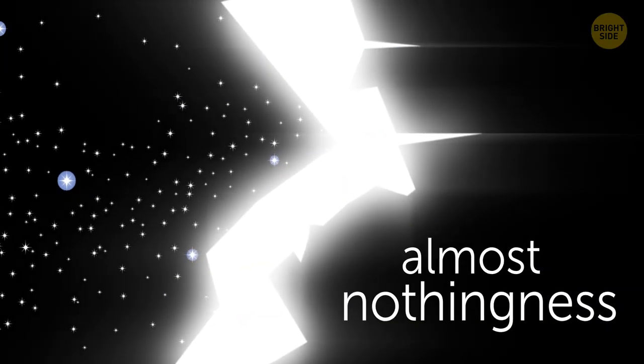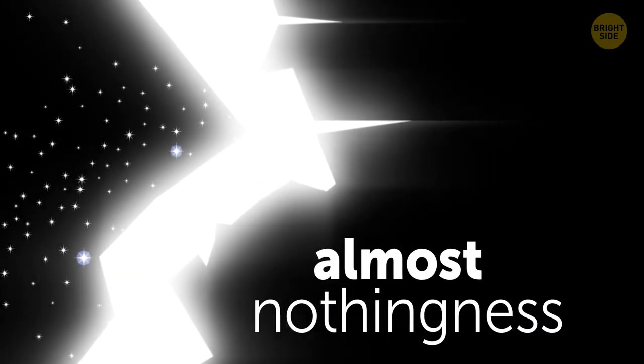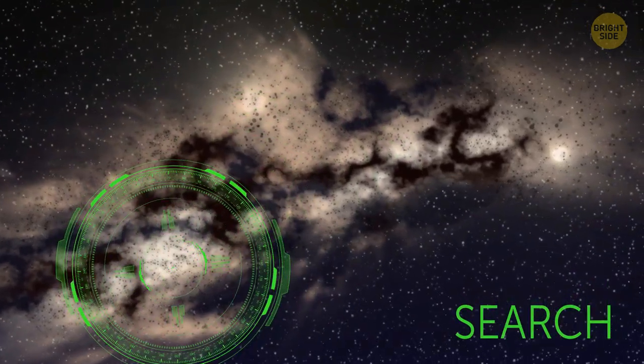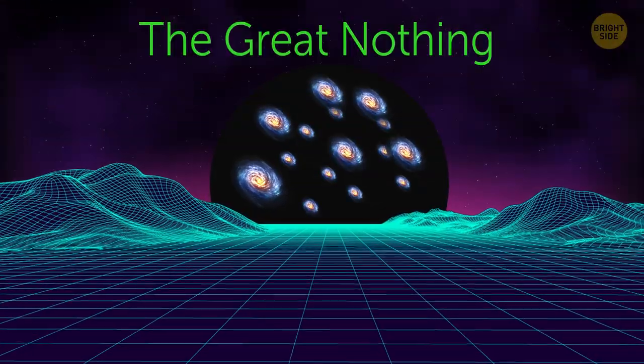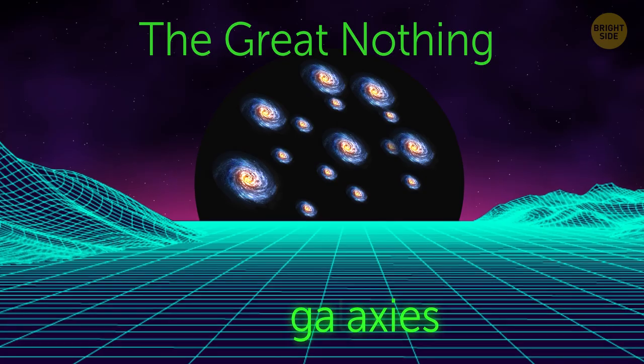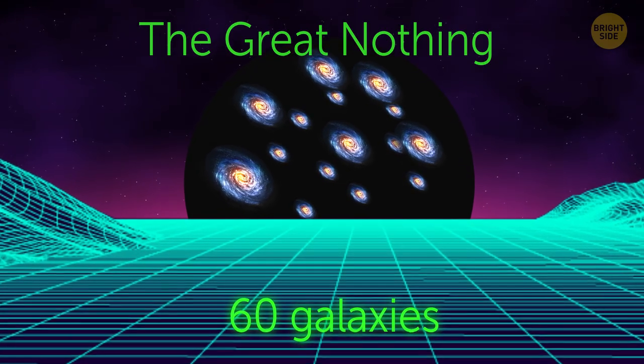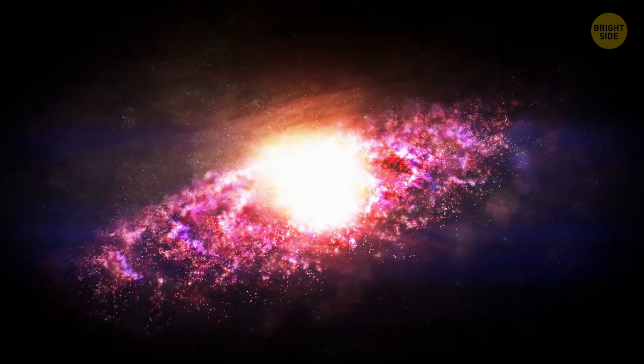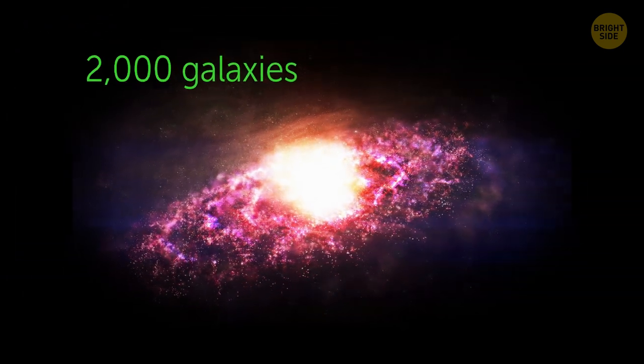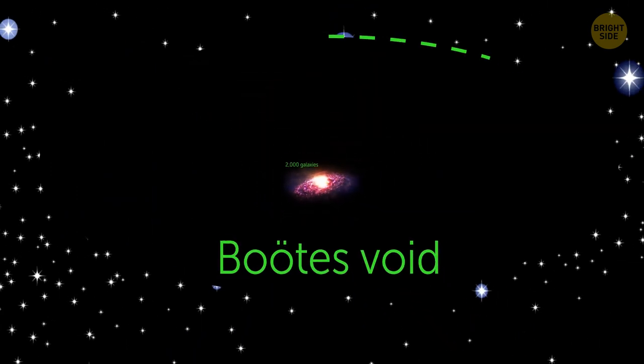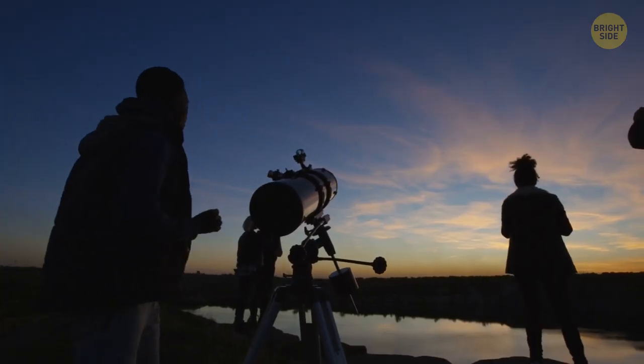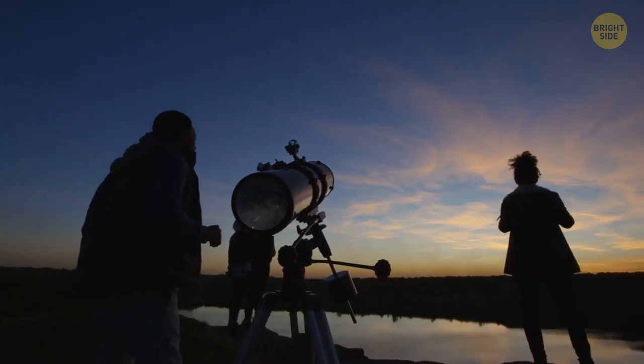But in this almost nothingness of great voids, almost is the key word. They still contain matter, just a lot less than anywhere else. The Boötes Void, or as it's also called the Great Nothing, was proved to have about 60 galaxies. And that's only the assumed number. Some estimations propose that the Great Nothing must have at least 2,000 galaxies in it. But 2,000 galaxies in a space as big as the Boötes Void is close to nothing at all. That's nowhere near what we consider normal for most other places in the universe.